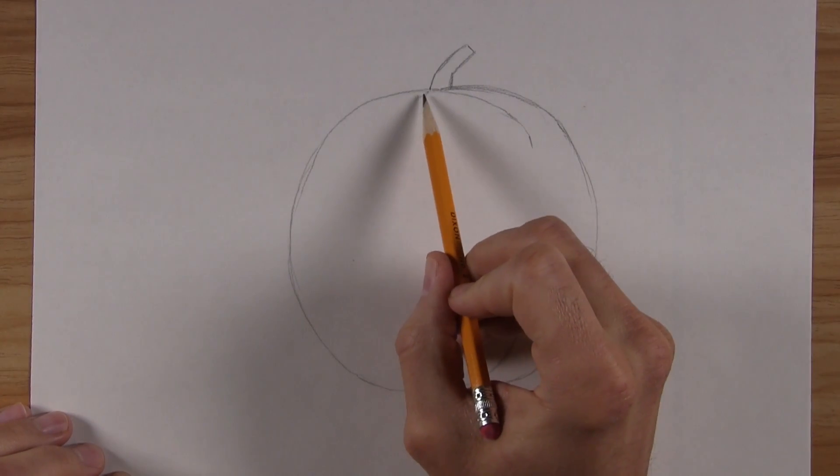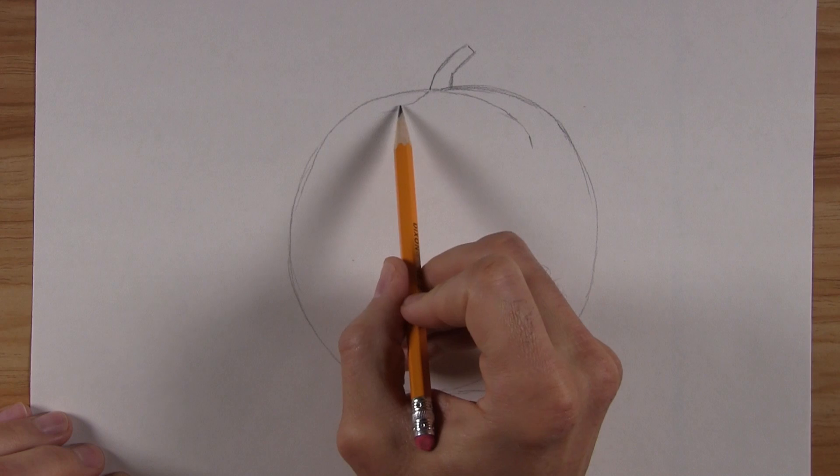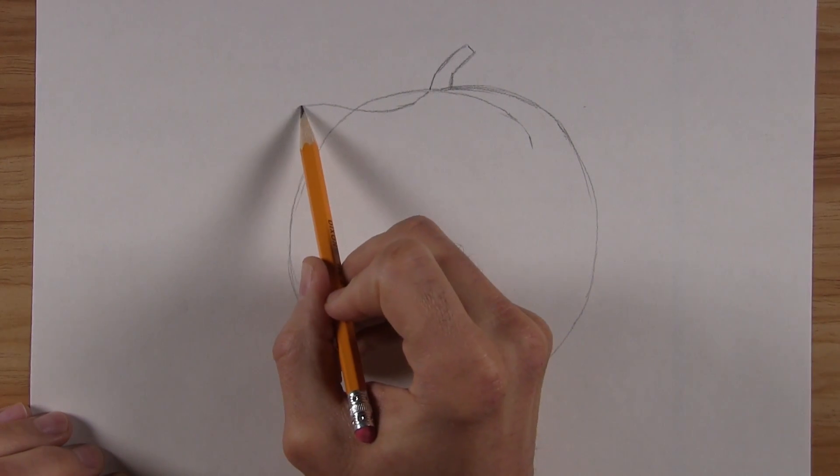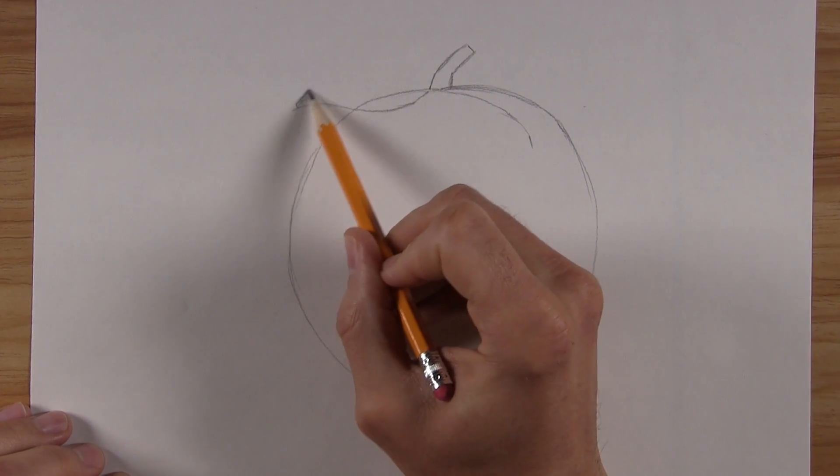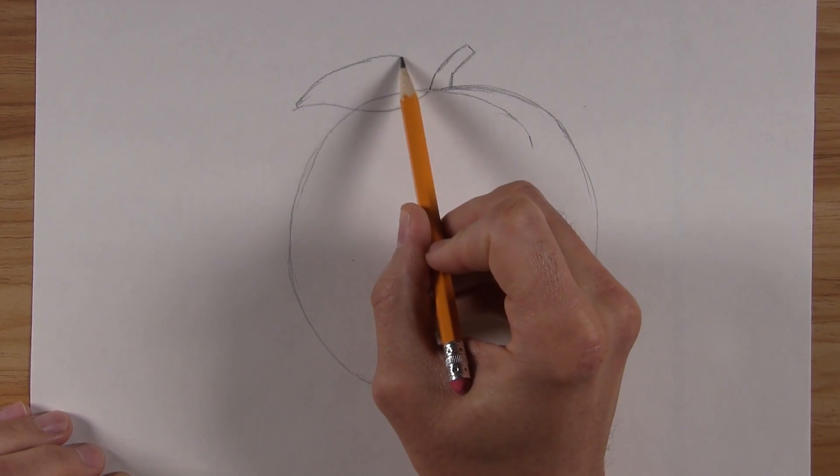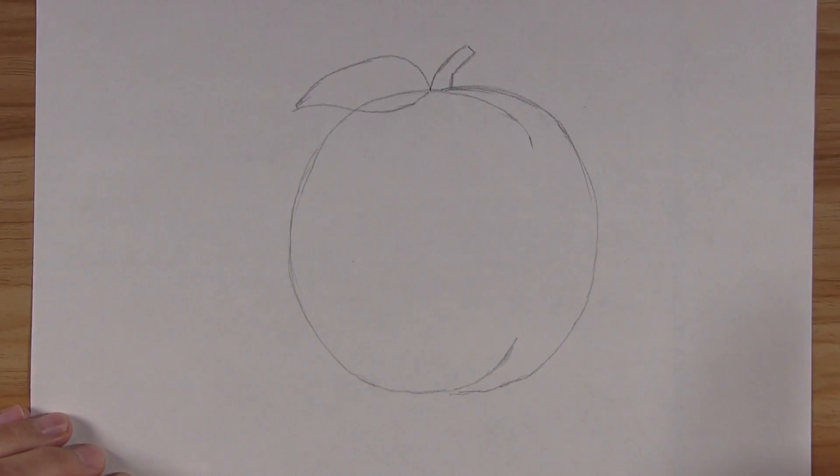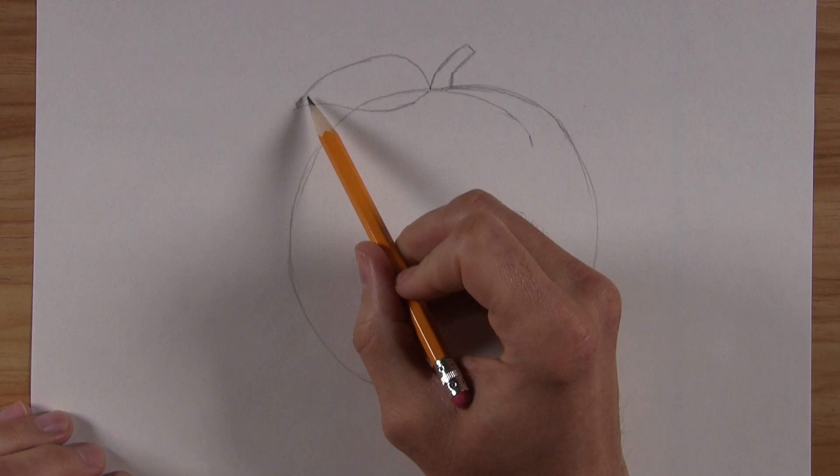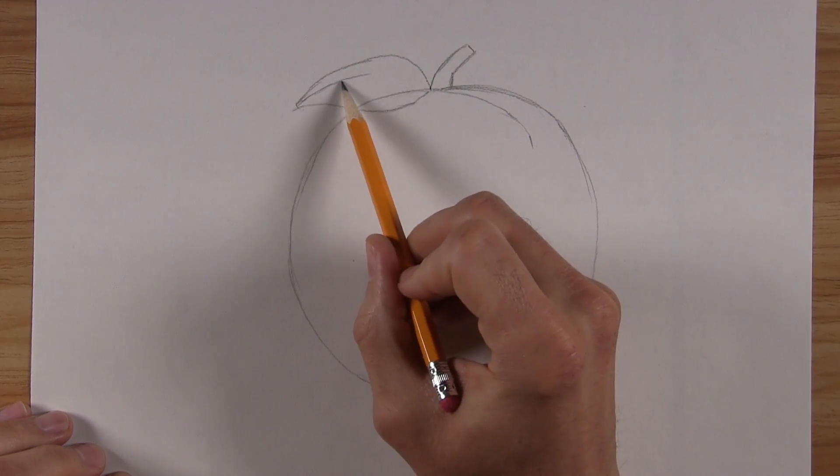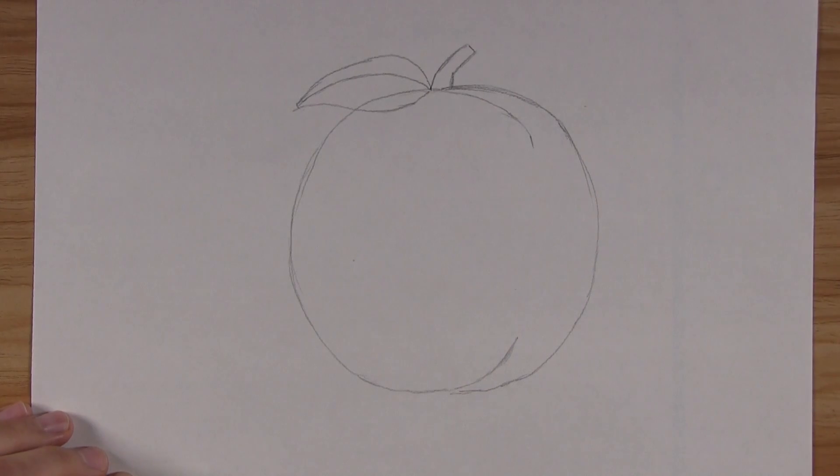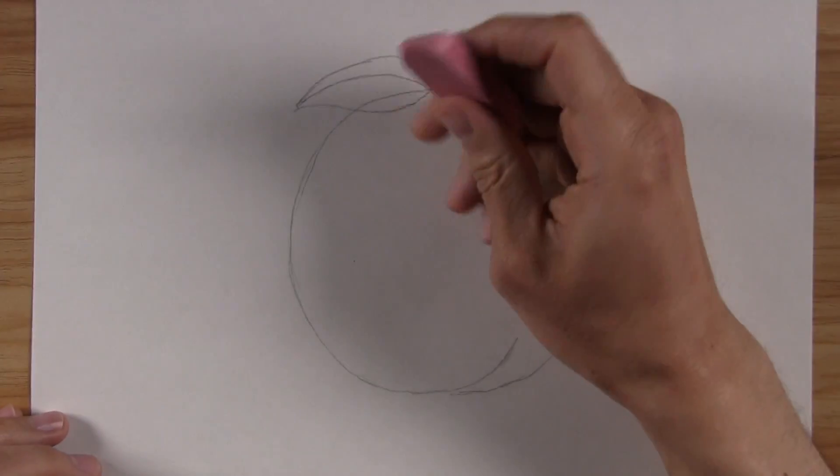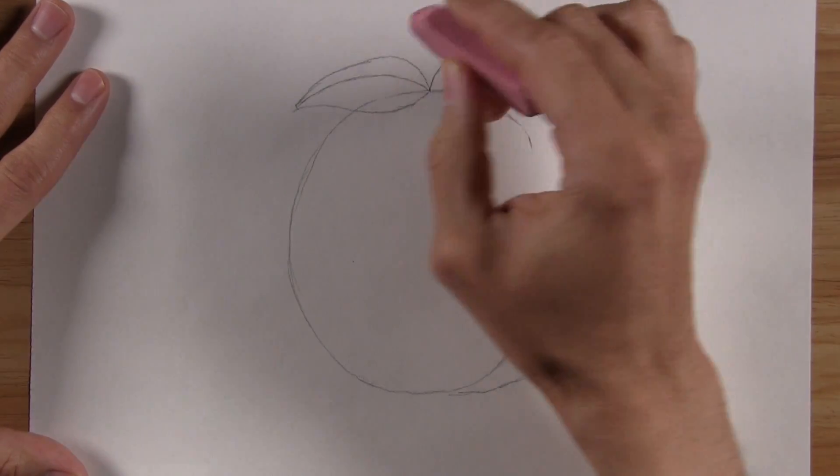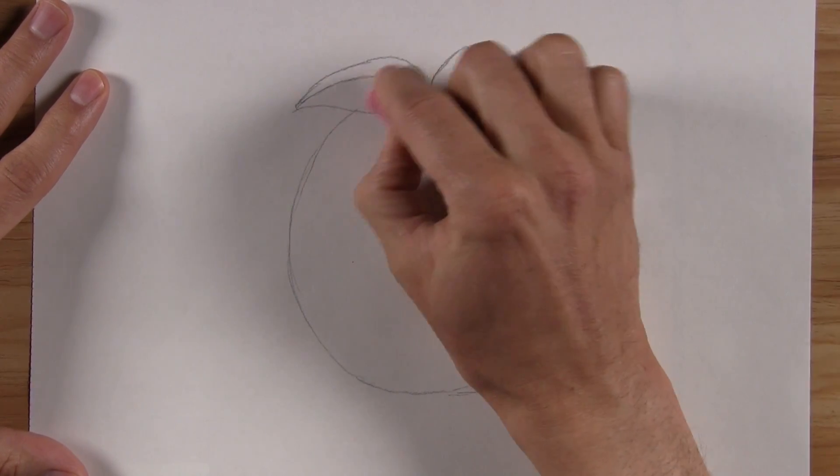Now let's draw a leaf on top. I'm going to make mine pointing to the side and overlapping the top just a bit. Draw another curved line from the outer tip to the stem to finish the leaf outline. Draw the center vein of the leaf with a curved line from the tip to the stem. There you go, just like that. See this line here? We shouldn't see that because the top part of the peach is hidden behind the leaf. So we will just erase it.